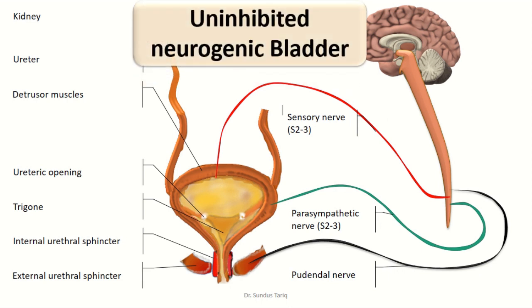The third abnormality is called uninhibited neurogenic bladder. In this condition, there is damage in the spinal cord above the sacral segments, specifically affecting the inhibitory signals. Therefore, the facilitatory impulses are overexcited, and only facilitatory impulses pass from the higher centers to the urinary bladder, leading to uncontrolled frequent micturition. Because inhibitory control is absent, the sacral centers become so excitable that even a small quantity of urine elicits an uncontrollable micturition reflex, resulting in uncontrolled frequent micturition.